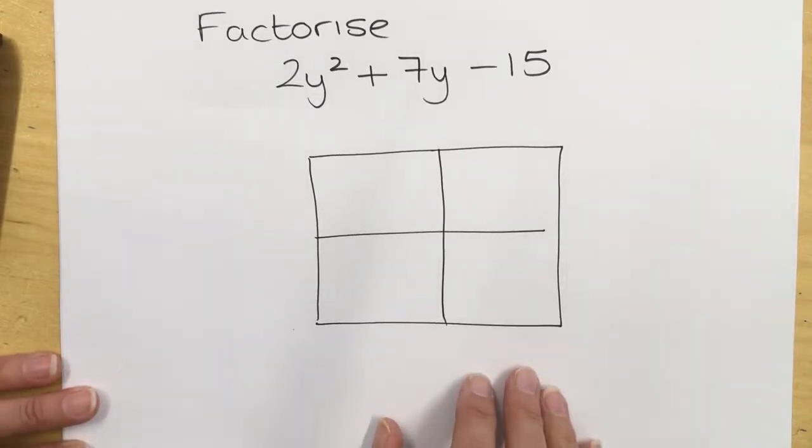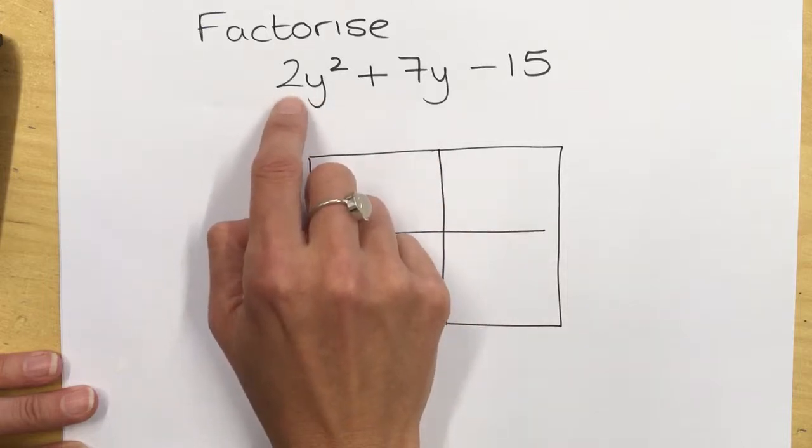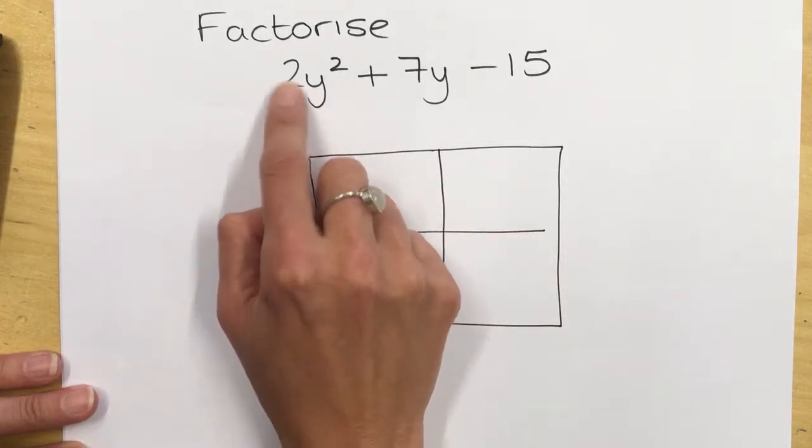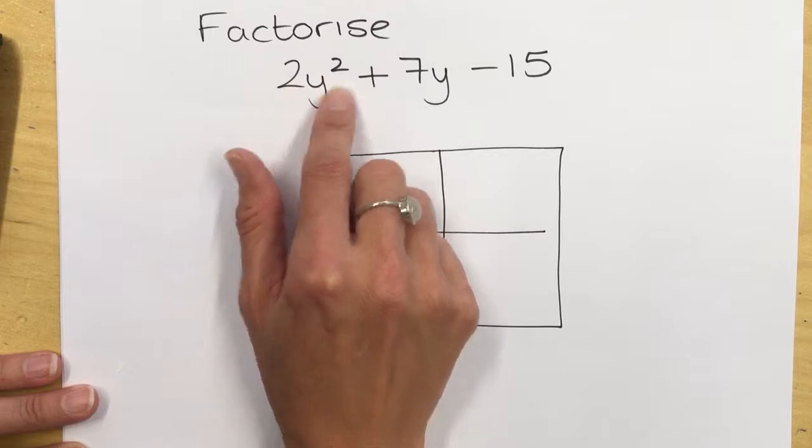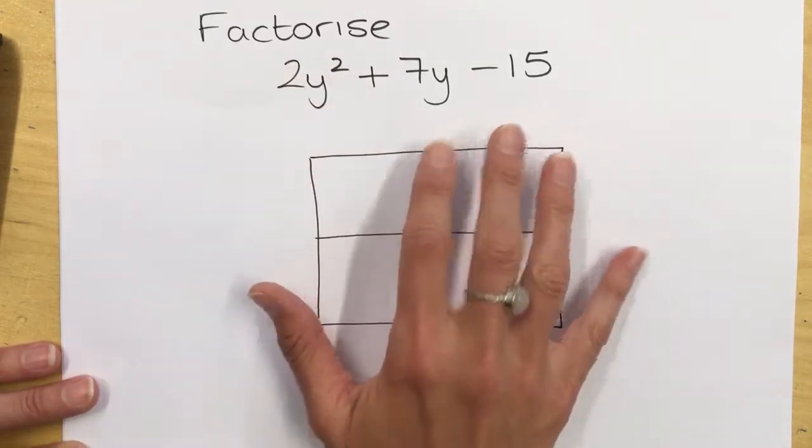This is one of the hardest types of quadratic to factorize, where you have this coefficient in front of the x squared or y squared. It makes the factorization harder.